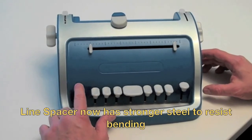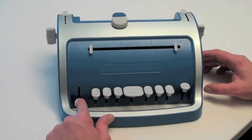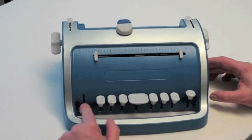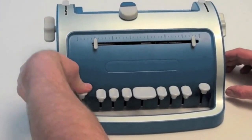Okay, the line space mechanism has been made of a much stronger steel. So when you get to the end, it will not bend. As you can see, it is quite strong.